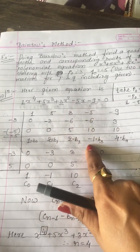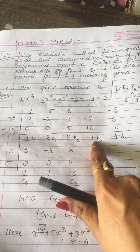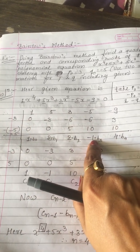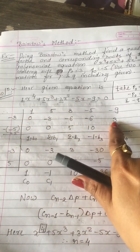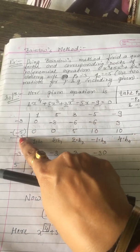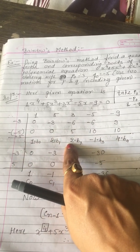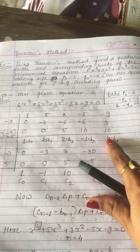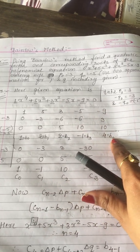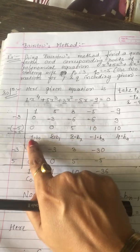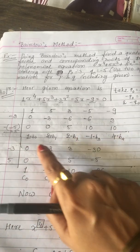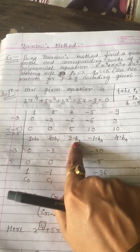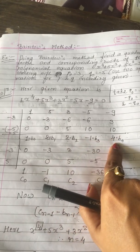Again multiply minus 3 by 2, giving minus 6. Then 5 multiplied by 2 gives 10. Addition of these three terms gives minus 1, that is B₃. Again multiply minus 3 by minus 1, giving plus 3. Then 5 multiplied by 2 is 10. Addition of these three is equal to 4, that is B₄. So these values are named B₀, B₁, B₂, B₃, and B₄.